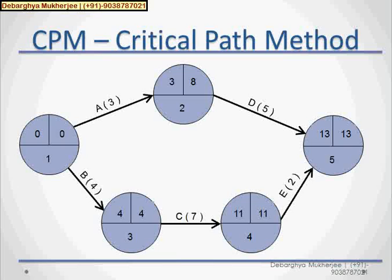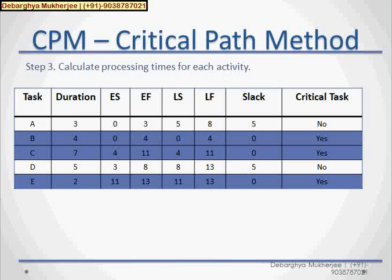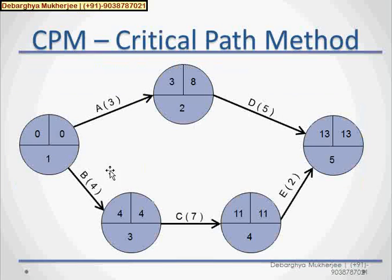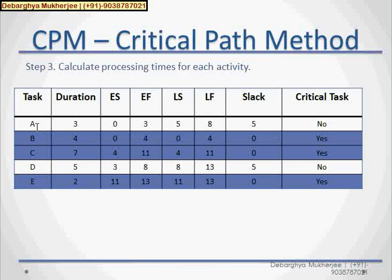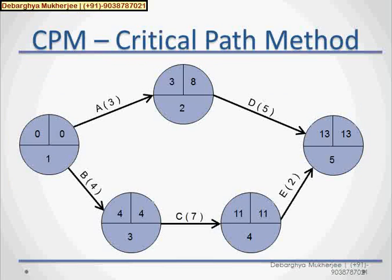Now, we will use critical path method. But, before that, we will create one table. Now, how to make the table? We will simply put all these values. Like, for see, we write task A. It is taking duration 3. And, earliest start and earliest finish is 0, 3. And, latest start and latest finish is 5 and 8. Okay.